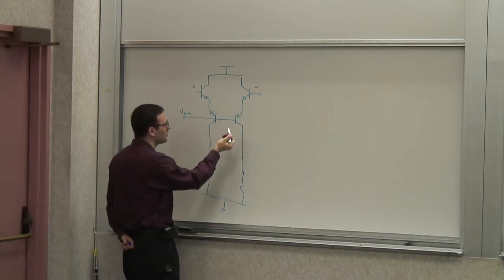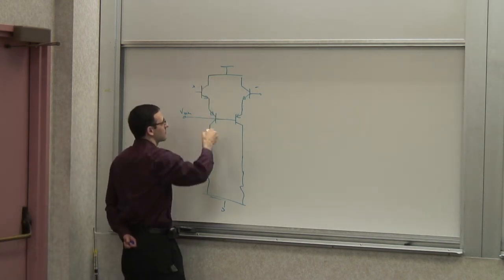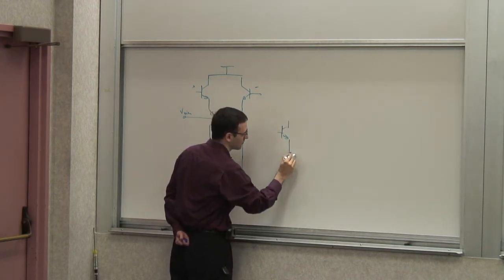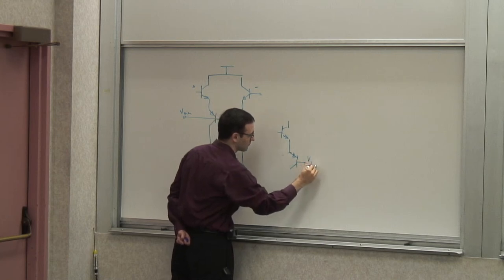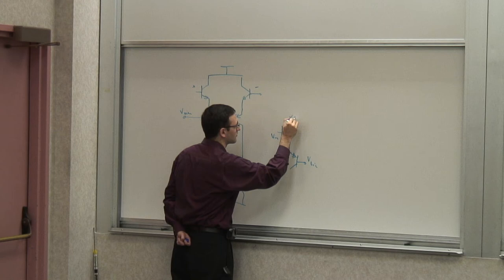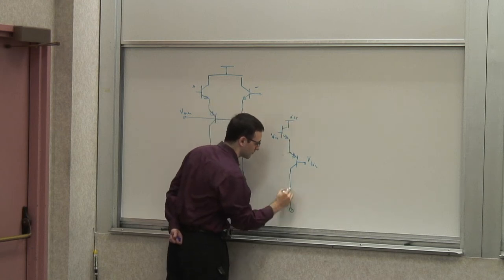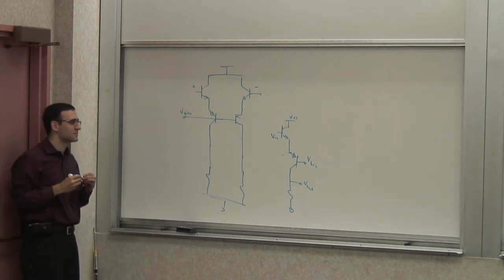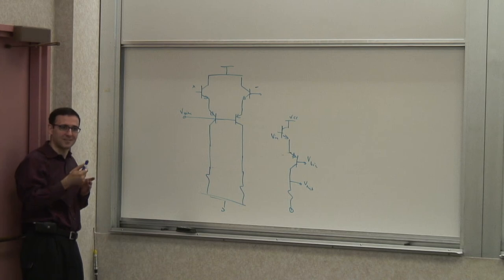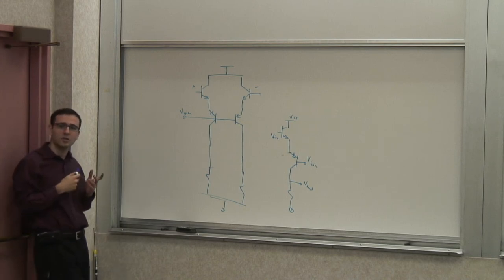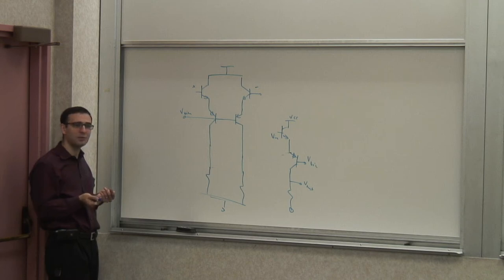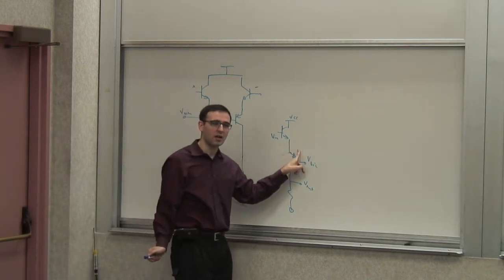If you look at the equivalent half circuit, you have a transistor driving a common-base stage. What kind of stage is it? Common collector followed by common base. The common collector gives you a reasonably high input impedance — it's like a buffer — but its output impedance is low. So is the input impedance of a common base.